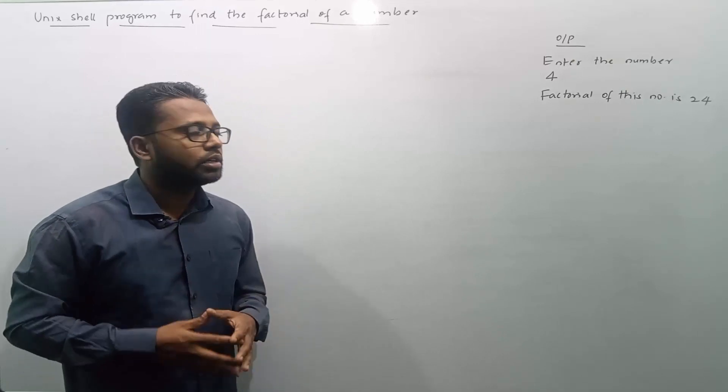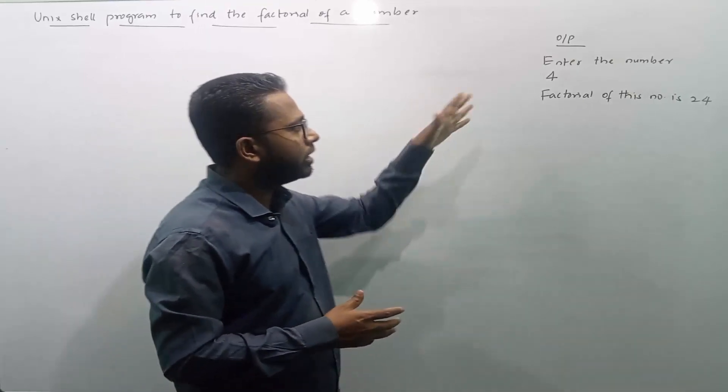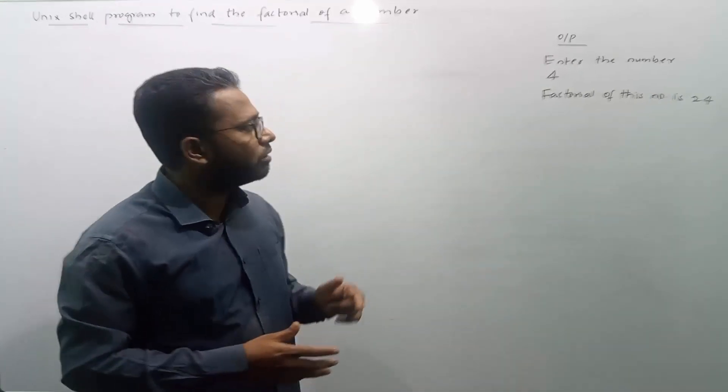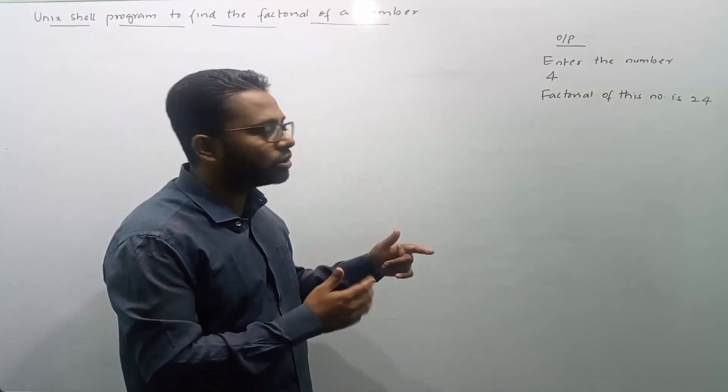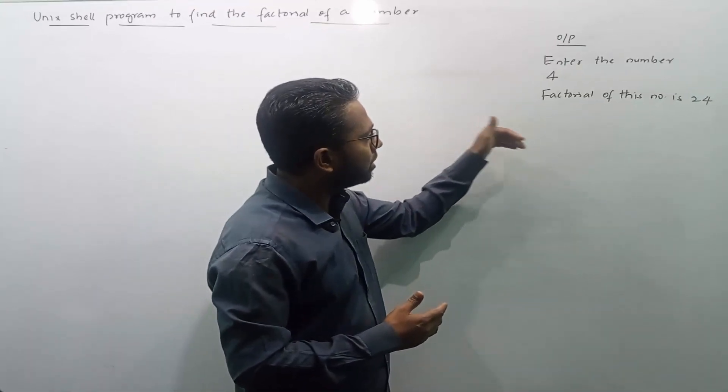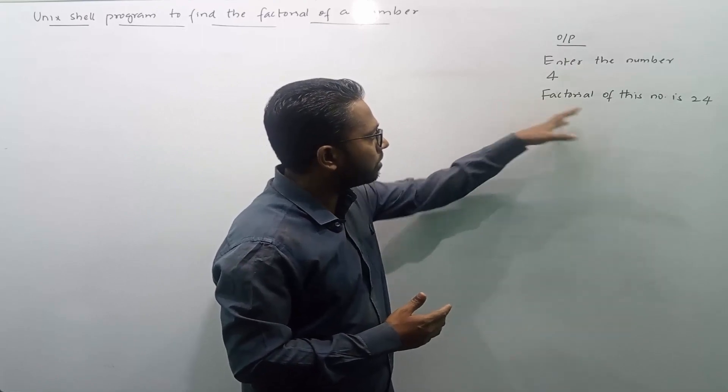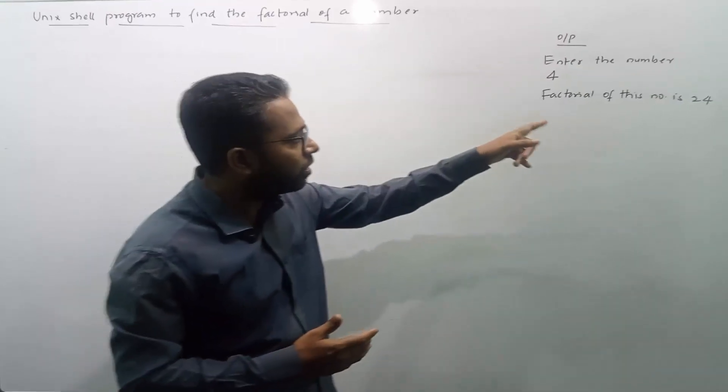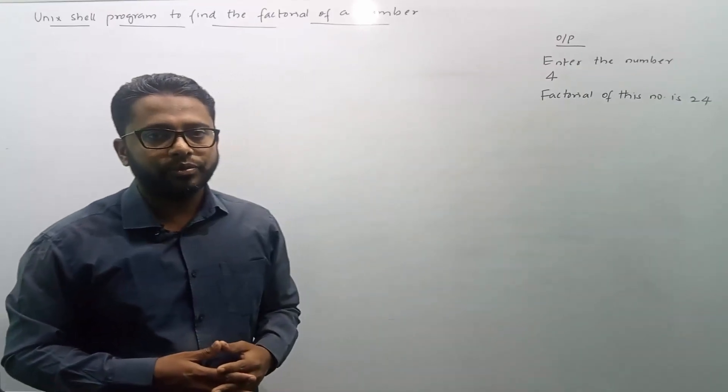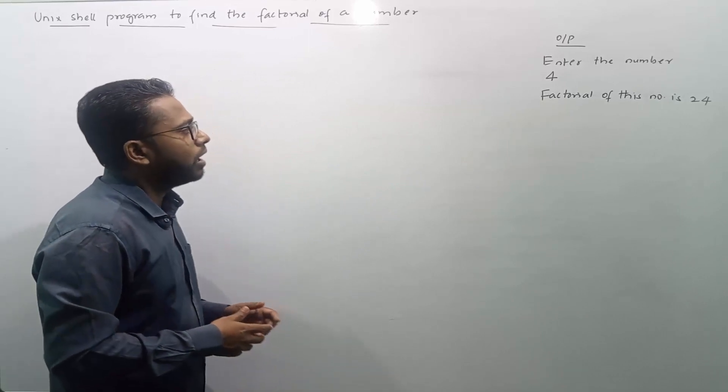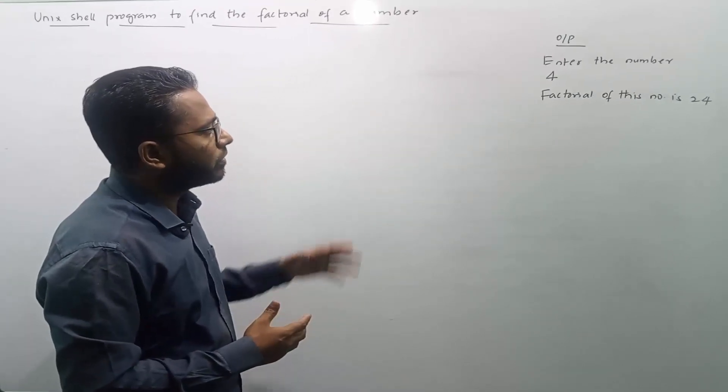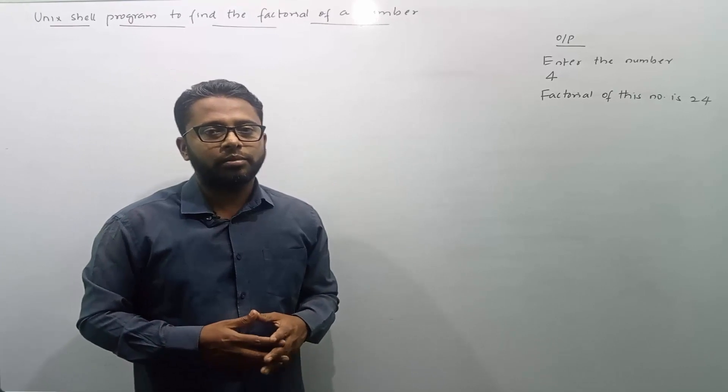Now let us start our discussion. As you can see, I have already written down the output of this program and when this program gets executed, it will ask user to enter a number, then this program will return the output which is the factorial of that number and we got the answer as 24.